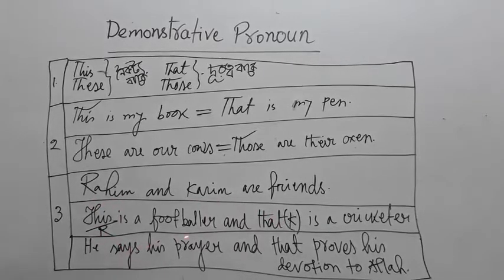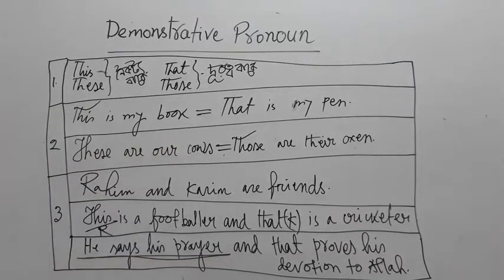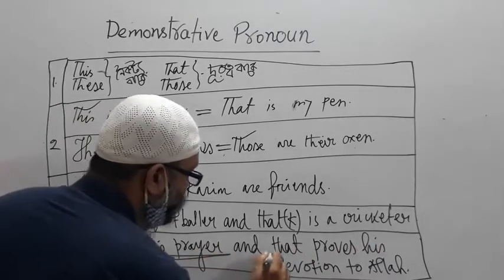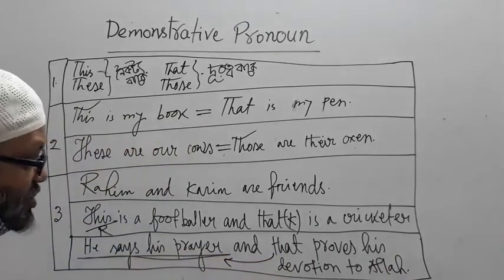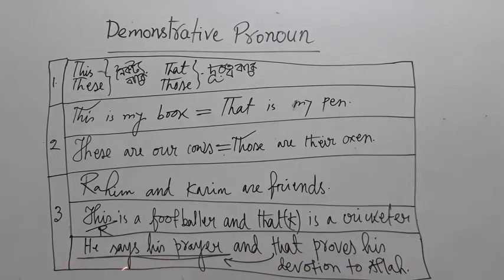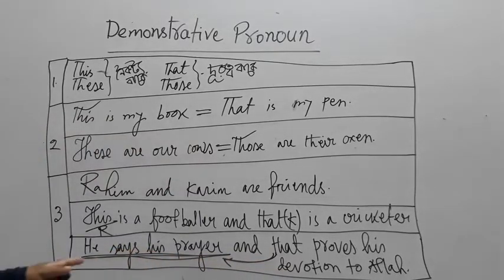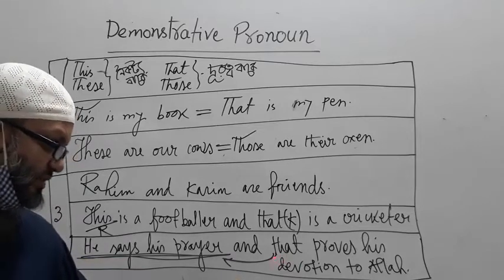Side by side, 'this' or 'that' can be used instead of a noun clause. For example: 'He says his prayer, and that proves his devotion to Allah.' Here, 'that' stands in place of the entire clause 'he says his prayer' — so 'that' is used instead of a noun clause.